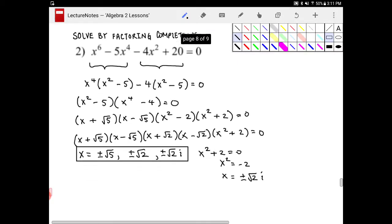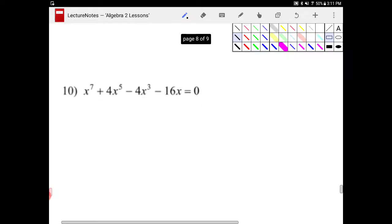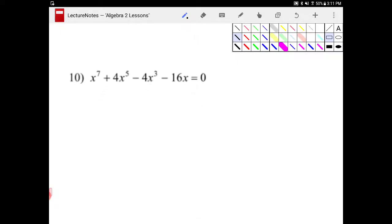Let's take a look at another example. Again, I'm going to factor completely and I'm going to solve for the roots by factoring. So upon inspection, I immediately noticed that there is a common factor of x. So I will factor that out. So I end up with x times x to the sixth, plus four x to the fourth, minus four x squared, minus 16 is equal to zero.